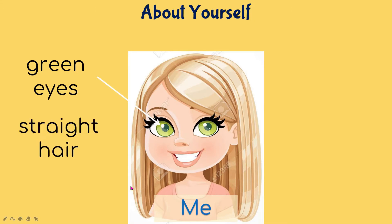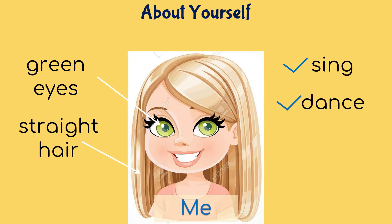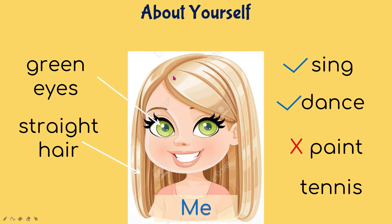I will also talk about my hair — I have got straight hair. You can even say I've got blonde hair, but I'm going to choose straight hair. We can also talk about what we can do; for example, I can sing and I can dance. And something I can't do — I can't paint. I'll add one additional point: my favorite sport is tennis.